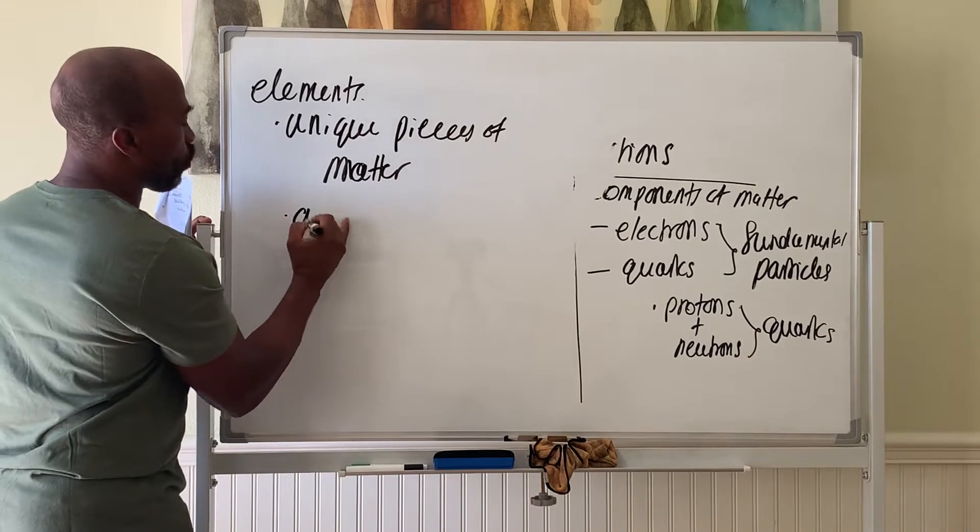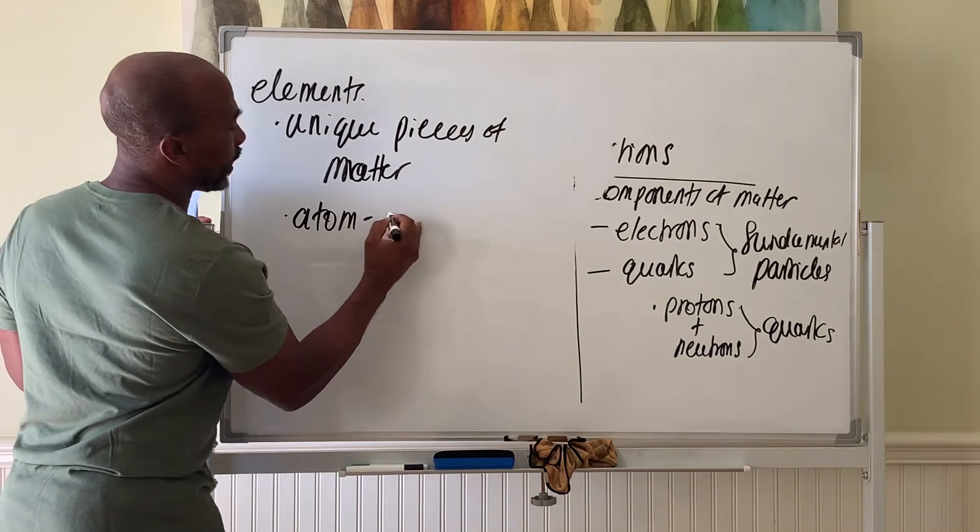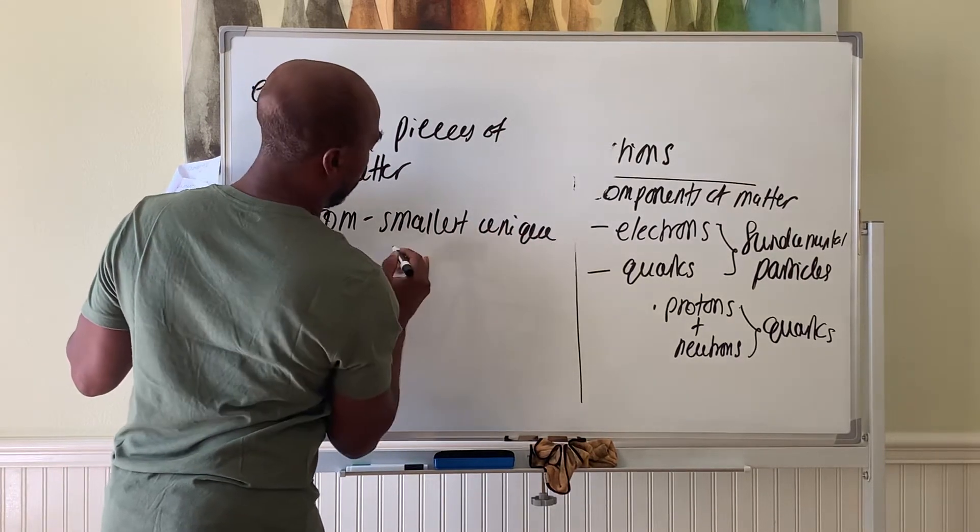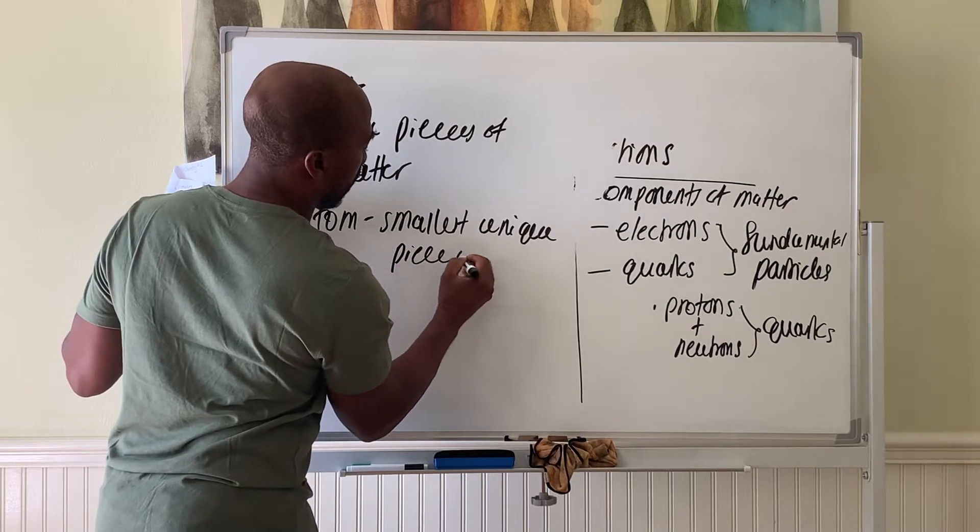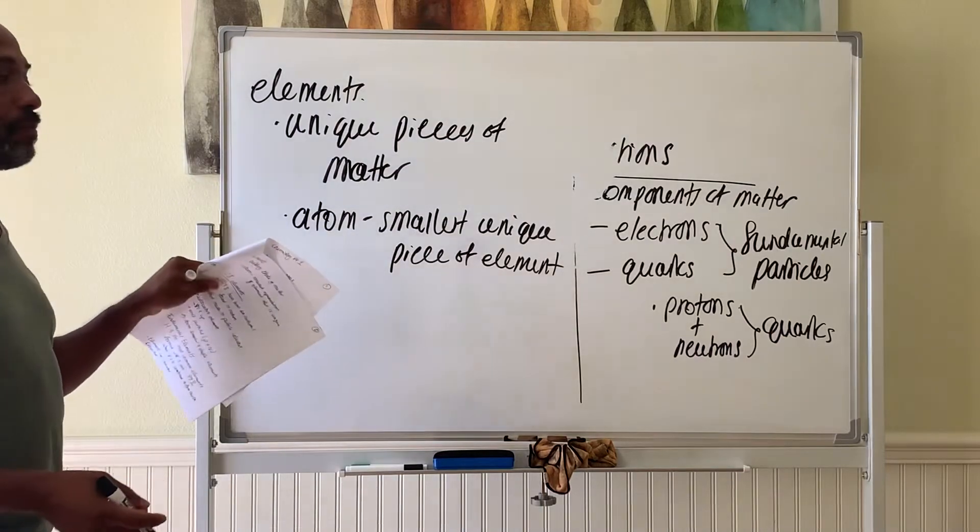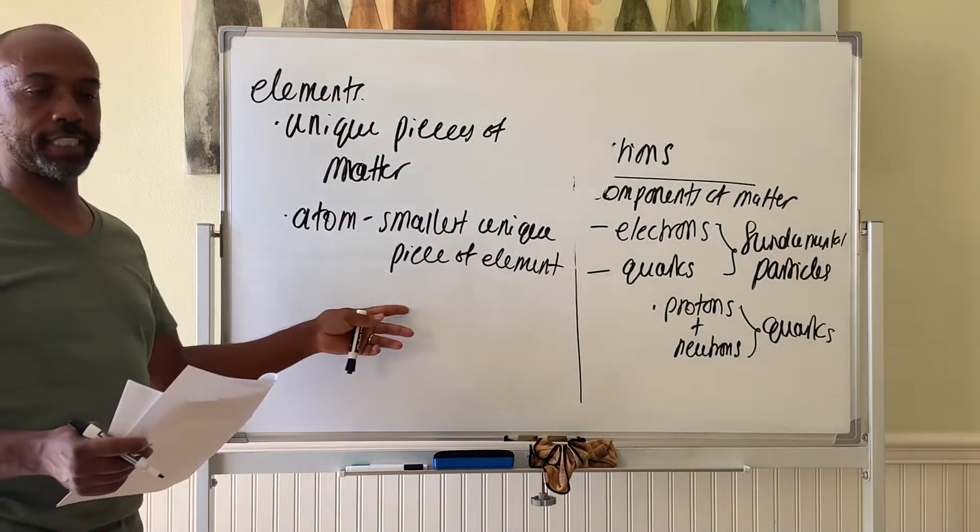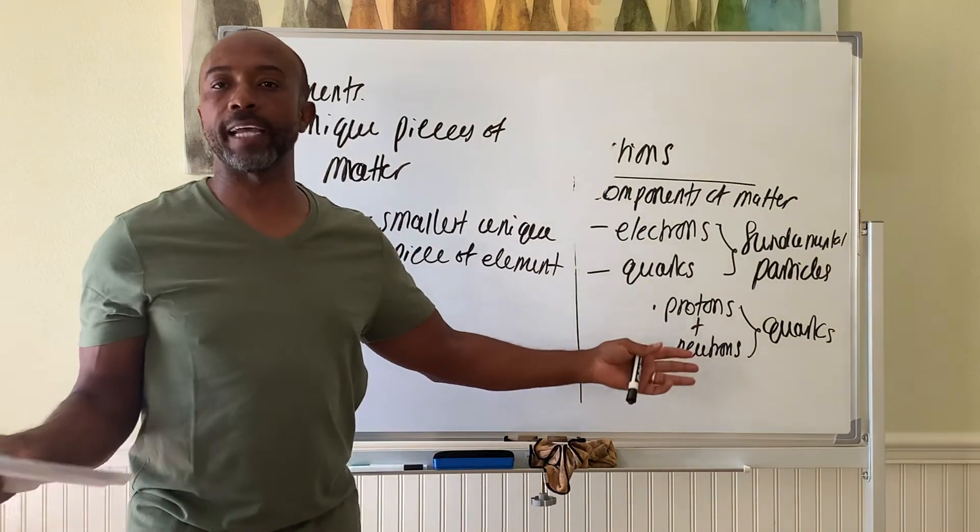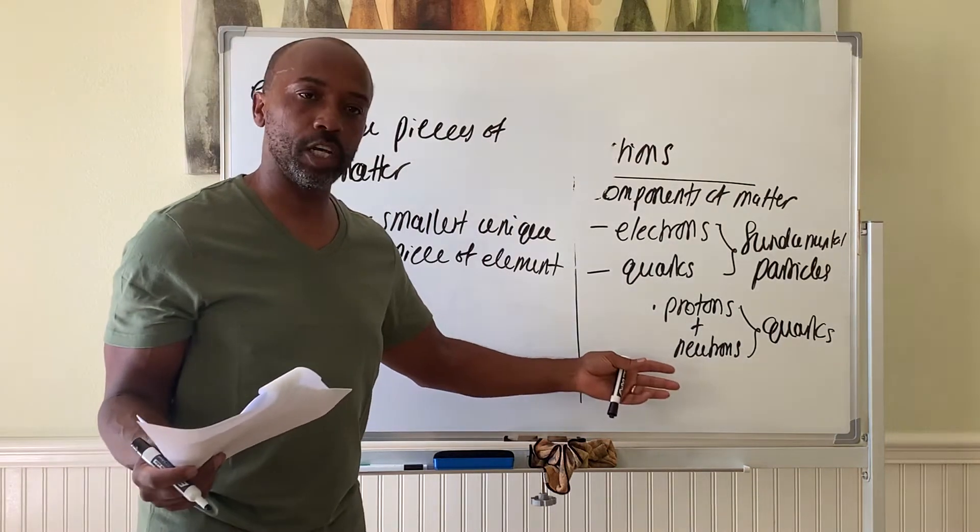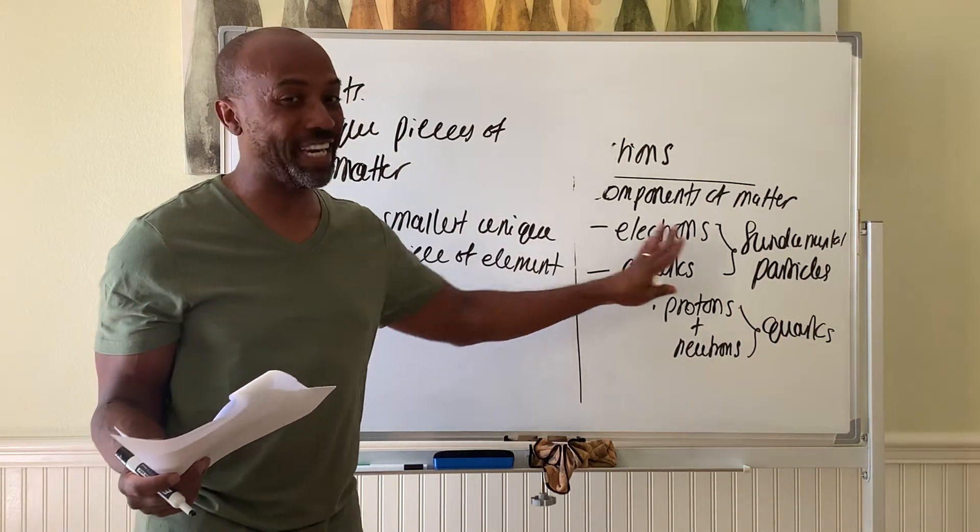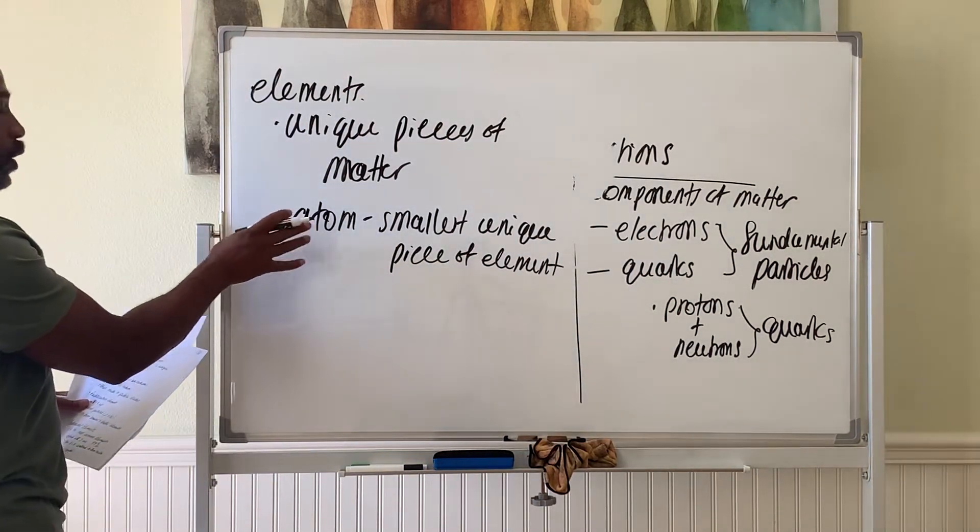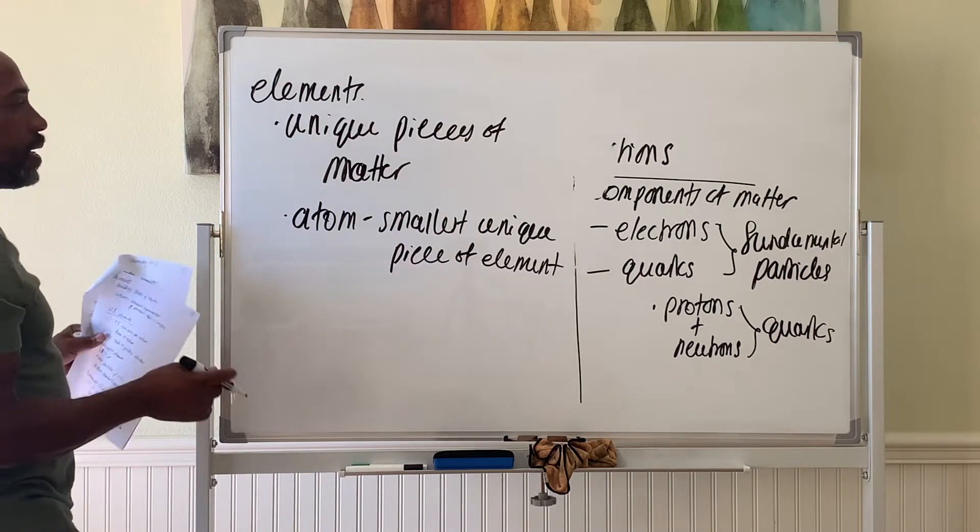The atom represents the smallest unique piece of an element. Once you get smaller than an atom, then you lose uniqueness. For example, all protons behave alike no matter if they're from carbon or oxygen. Same for all neutrons. So they're no longer unique. At the atomic level you have uniqueness there.